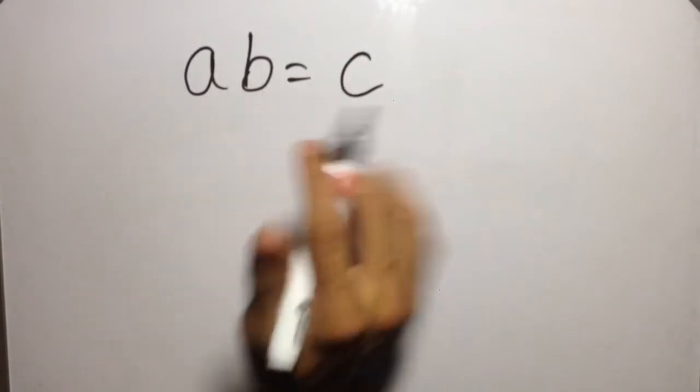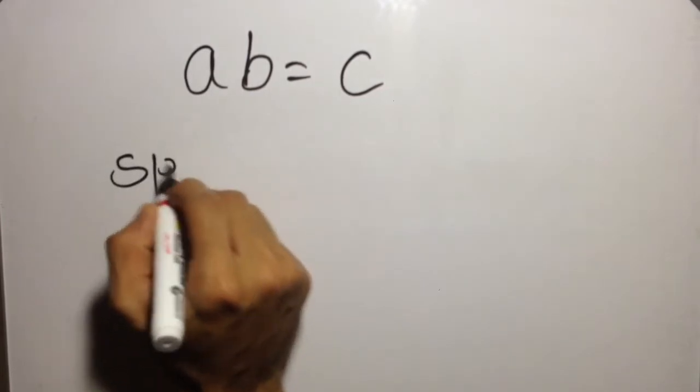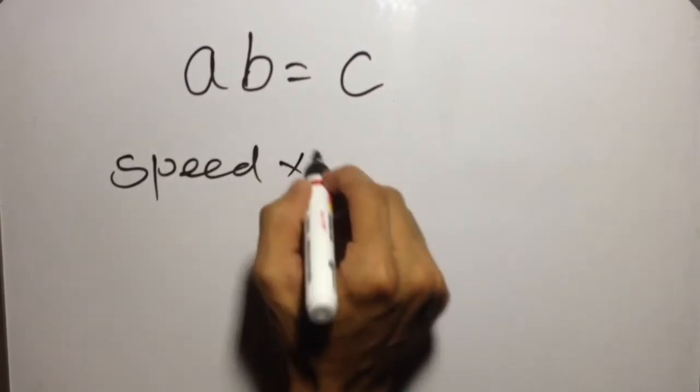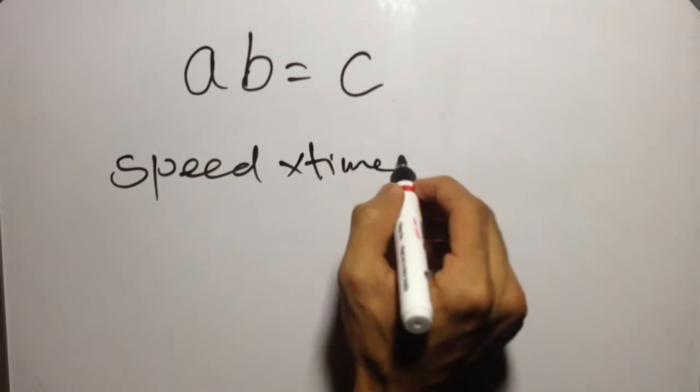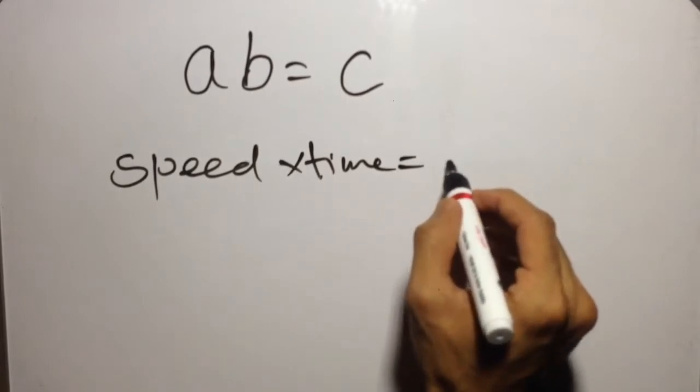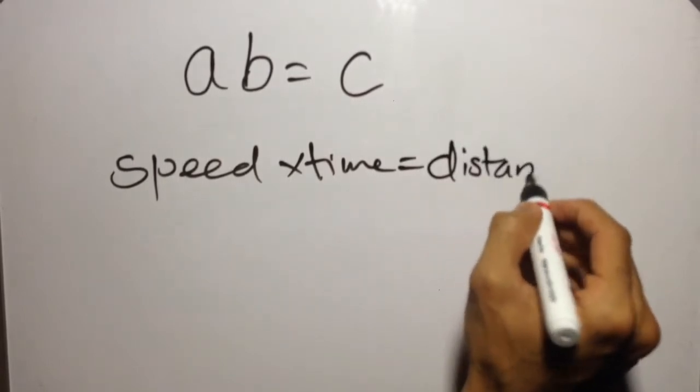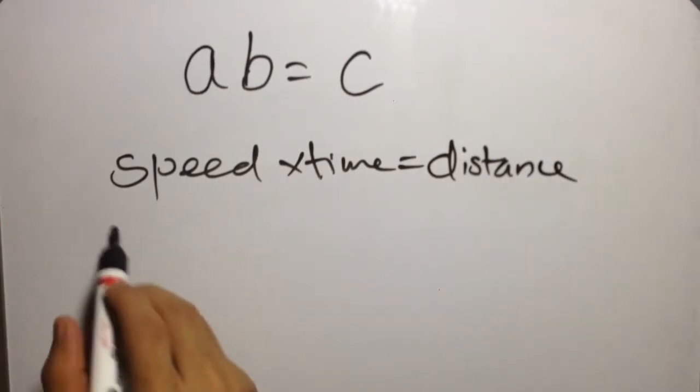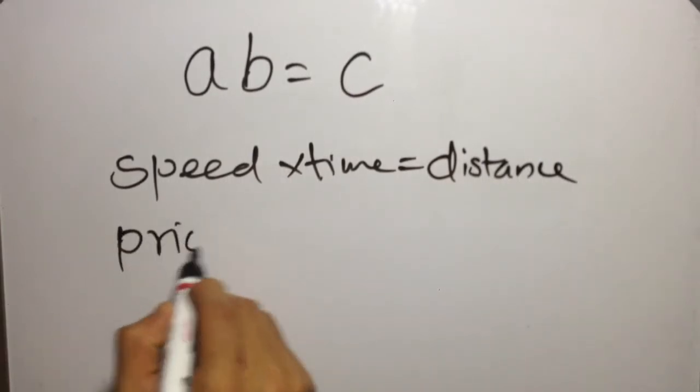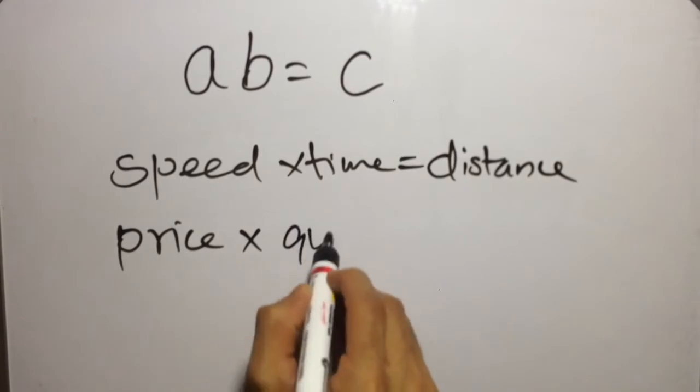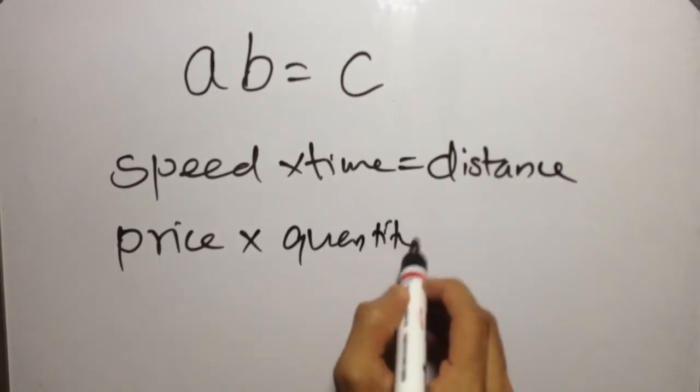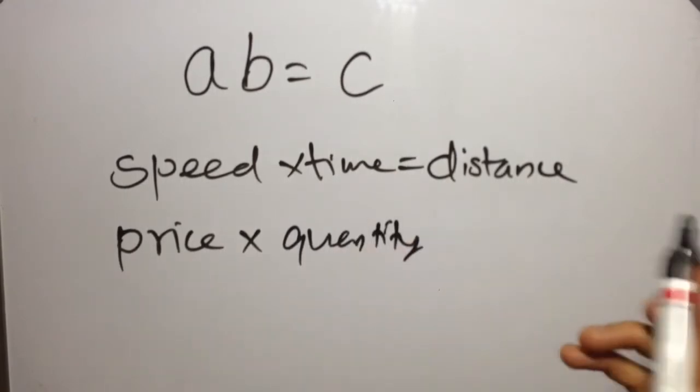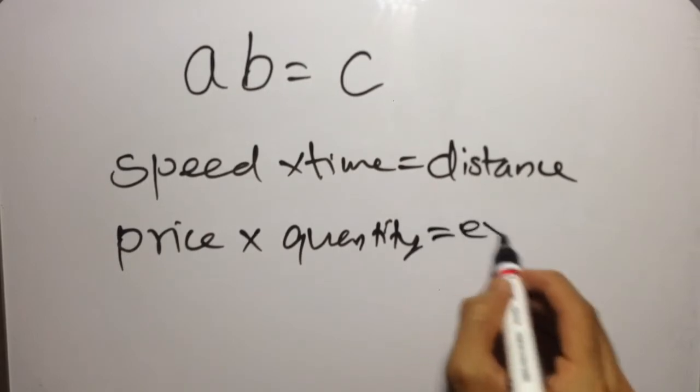We have speed into time for a fixed distance, and price into quantity of consumption is equal to expenditure.